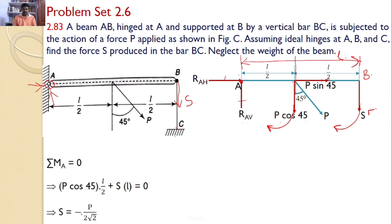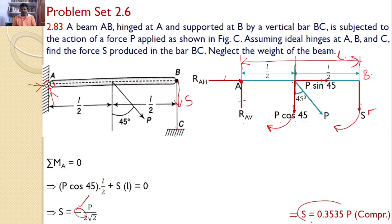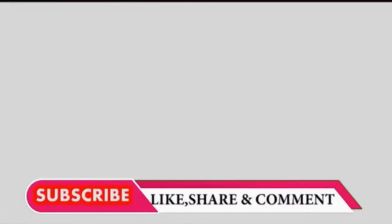After simplification, we get S = −P / (2√2). The negative sign indicates that our initial assumption of a tensile force was incorrect — the actual force developed in bar BC is compressive. Hence, the final answer is S = 0.3535P, compressive in nature.